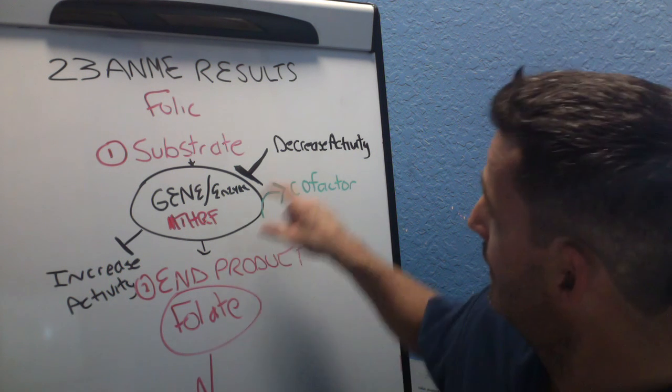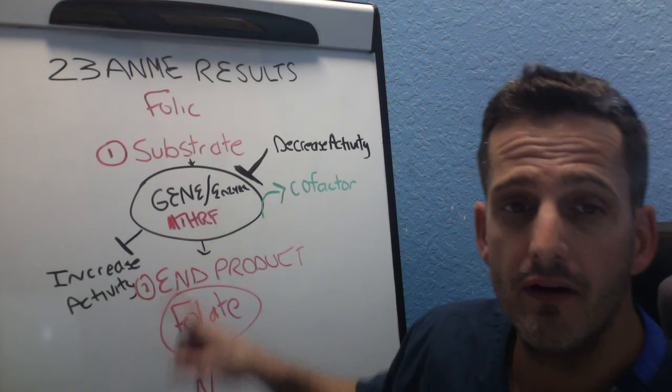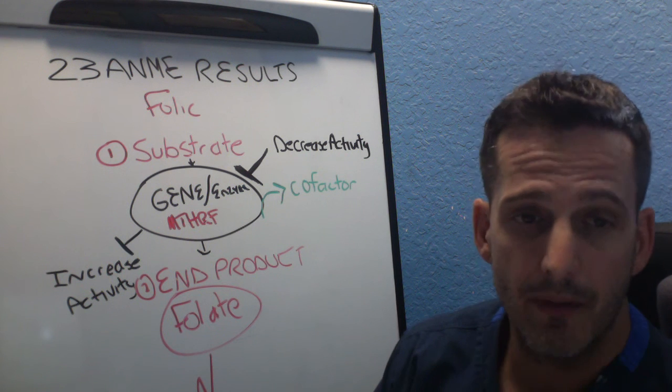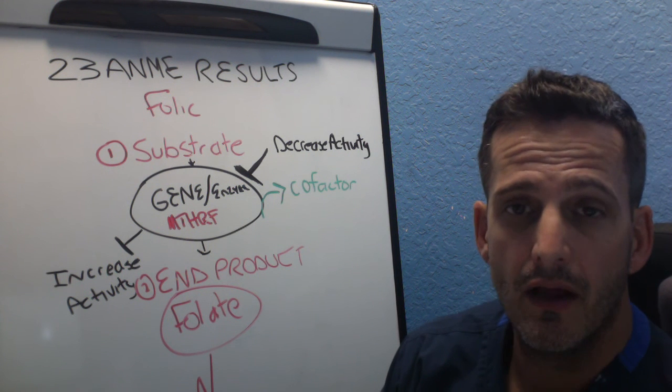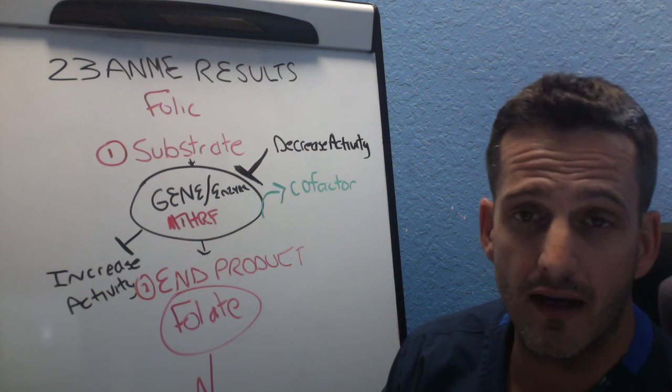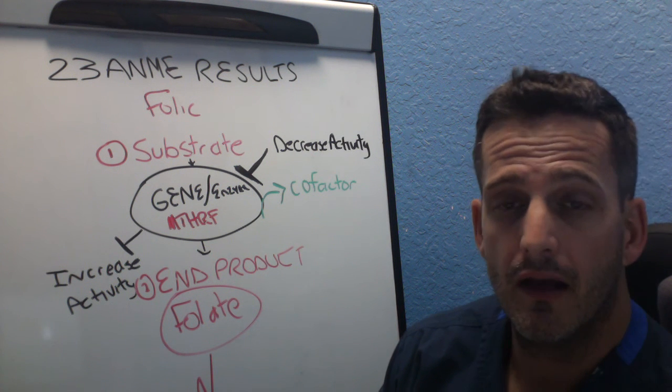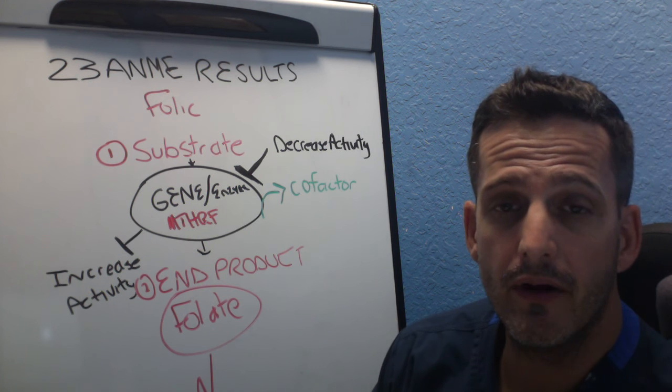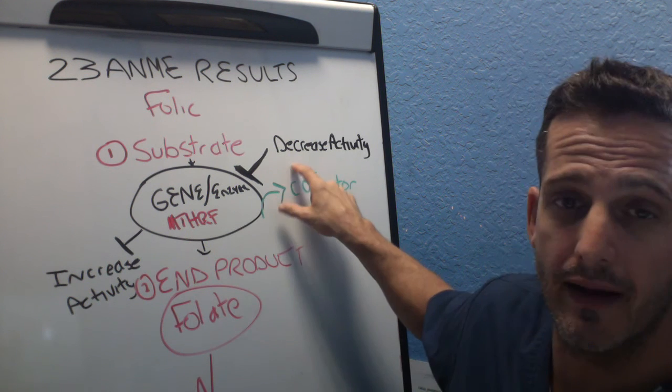Decreased activity. Why would a gene have decreased activity? Because of environmental toxins, things like heavy metal toxicities, alcohol, nitric oxide, laughing gas, infections, bacterial overgrowth. These are typically the things that we can help you with.